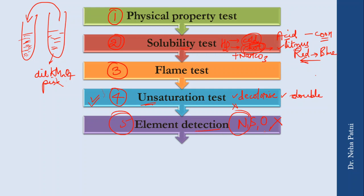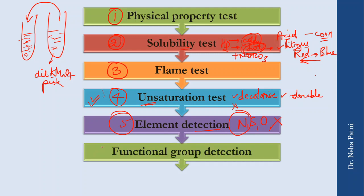The sixth step is functional group detection. Once you are fairly sure about the compound's nature — whether it has a –COOH group, ketone, aldehyde, nitro, amine, or amide group — you perform specific functional group tests. A separate video covers each functional group test individually.